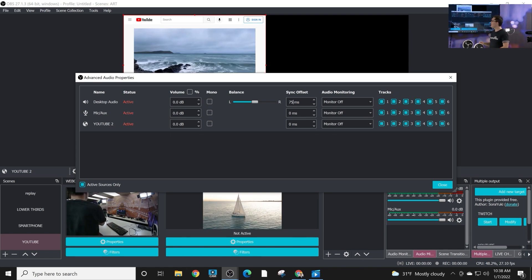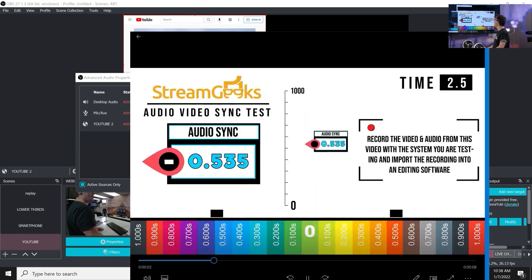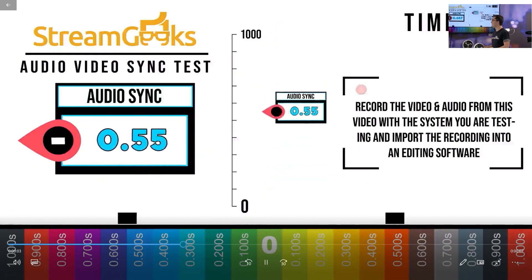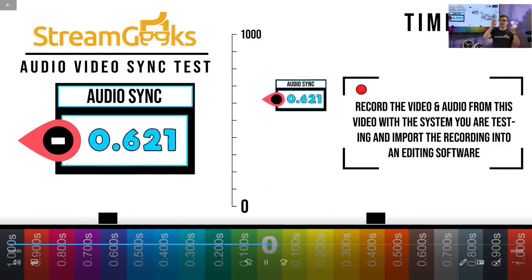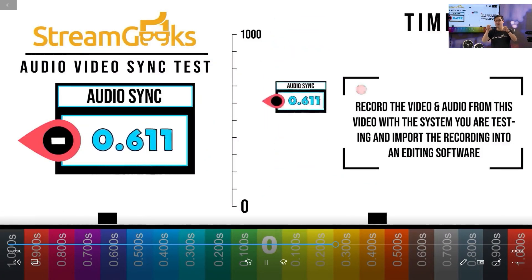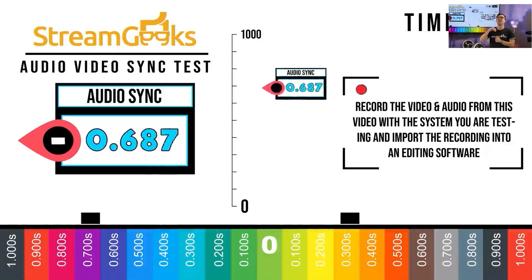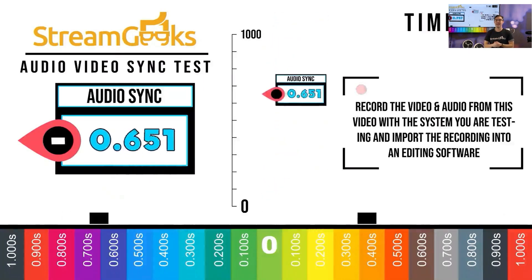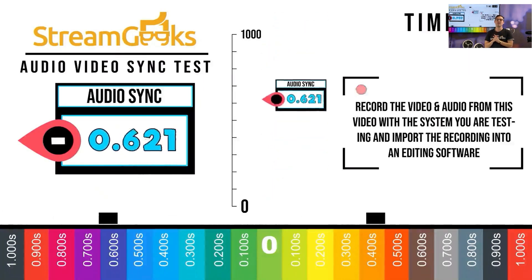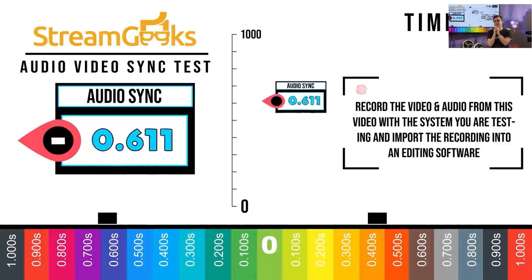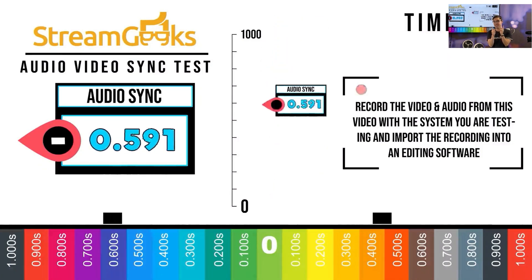If you want to take it the extra mile, go ahead and download the video file below. You take your camera and microphone in OBS, record this file, take that recorded file, look at it in an editor, and see exactly what the audio sync offset you need to add into OBS. That's how it works — pretty cool stuff.